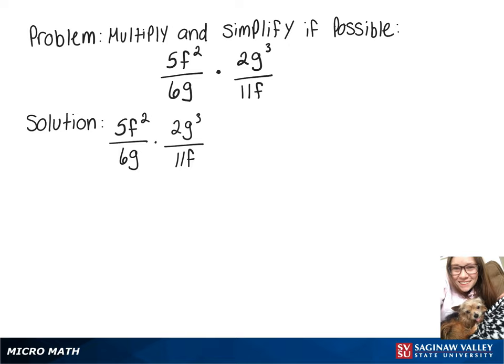In this video, we're going to multiply and simplify 5f² over 6g times 2g³ over 11f.